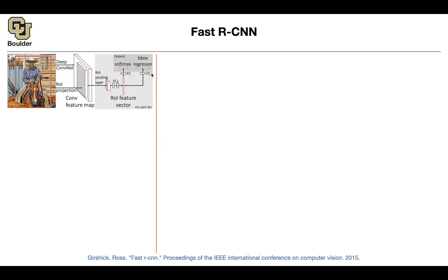Let's see what ROI pooling is. We know there is some region proposal algorithm proposing regions to us. Take one of those regions on the original image and then do a projection — that's going to give you a region on your convolutional feature map. This is very easy to compute. We know what convolution we are using, and we can actually find the coordinates of this box on the feature map. Finding the coordinates is straightforward — it's just simple mathematics.